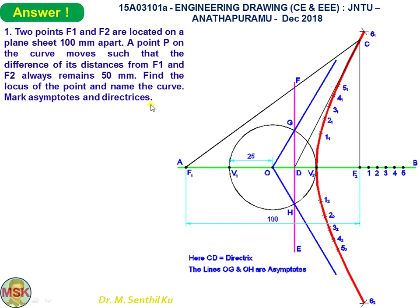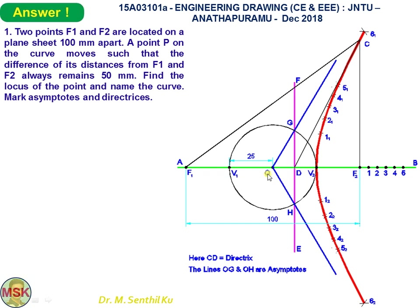Now we see the asymptotes. With V1-V2 as diameter, its midpoint as center, draw a circle. Through point D draw a vertical line; it cuts the circle at points G and H. Drawing a line joining O and G and extending it gives one asymptote. The line O-H extended gives the other asymptote. So OG and OH are the asymptotes. The answer for question one is now complete.